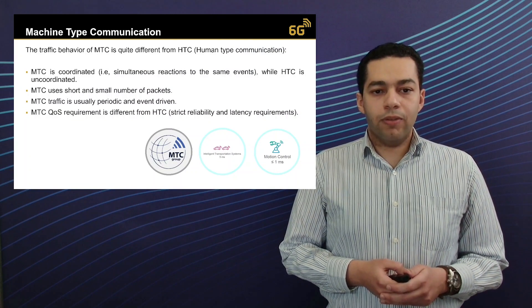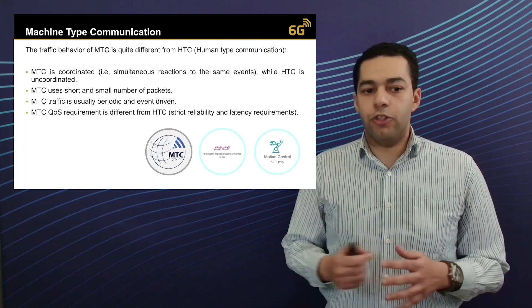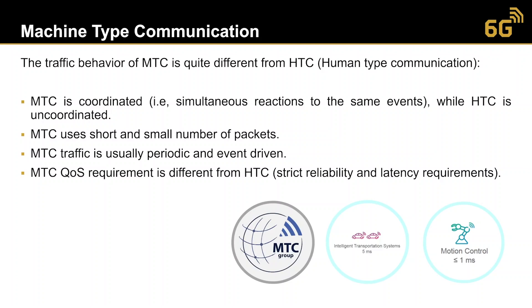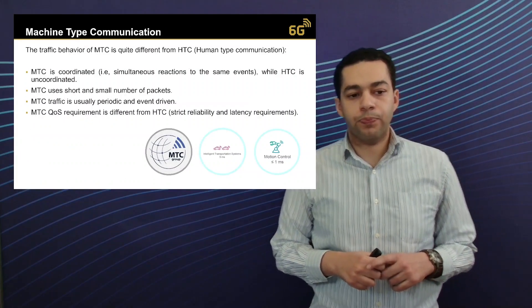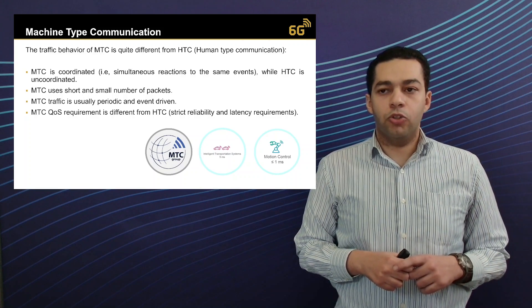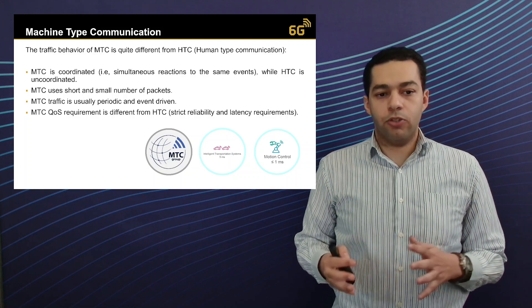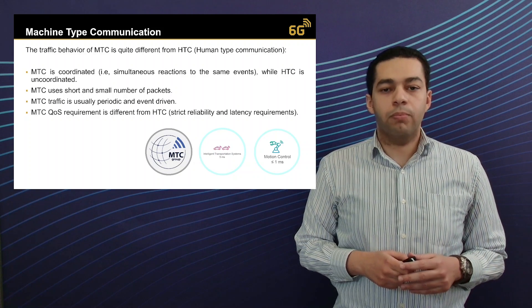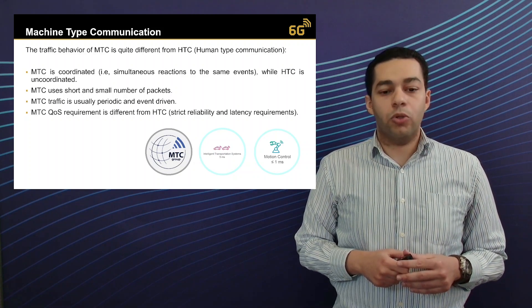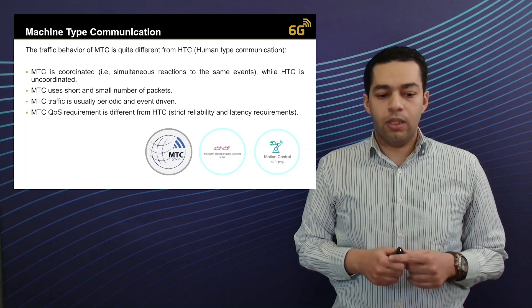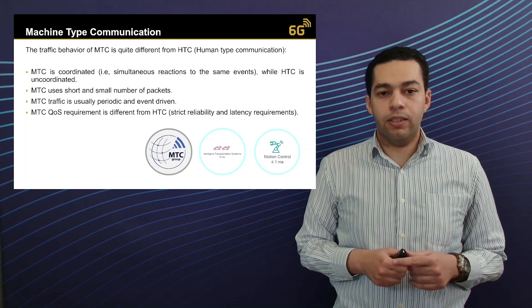The behavior of MTC traffic is quite different from human type communication. This is due to the fact that machine type communication traffic is more coordinated and could be periodic, reacting to specific events, while human type communication traffic is not coordinated and cannot be expected. Moreover, machine type communication traffic usually uses short packets and a small number of packets to convey messages. Furthermore, MTC quality of service constraints are usually more strict and do not tolerate long delays.